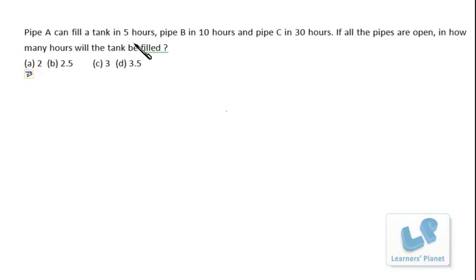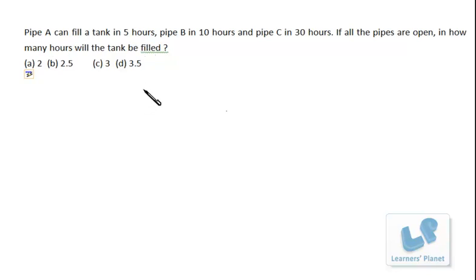Pipe A can fill a tank in 5 hours, pipe B in 10 hours and pipe C in 30 hours. If all the pipes are open, in how many hours will the tank be filled? We haven't used a single formula — just going conceptually, the problems are solved very easily. The first pipe fills 1/5 of the tank per hour, the second fills 1/10, and the third fills 1/30. All three are working together.